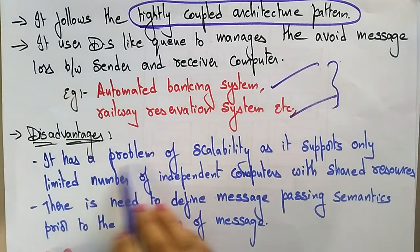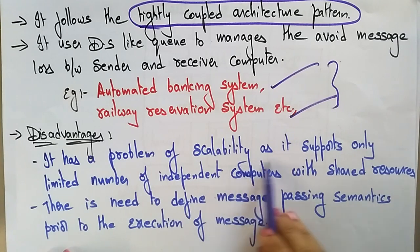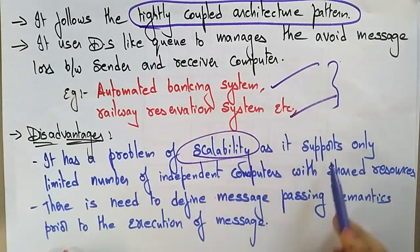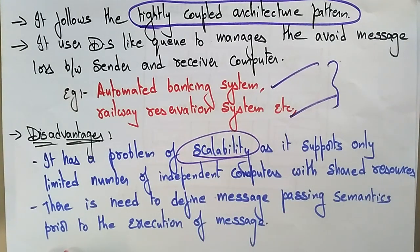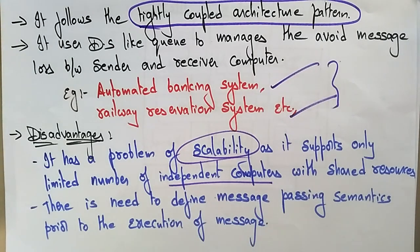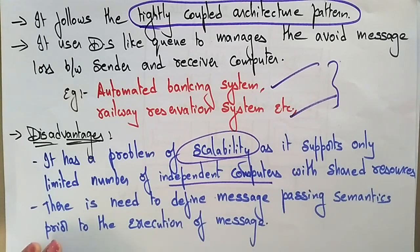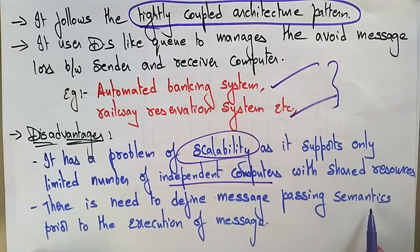The disadvantages of the distributed operating system include a problem of scalability, as it supports only a limited number of independent computers with shared resources — it cannot handle a large number of computers at a time. There is also a need to define and manage message passing semantics prior to the execution of messages.